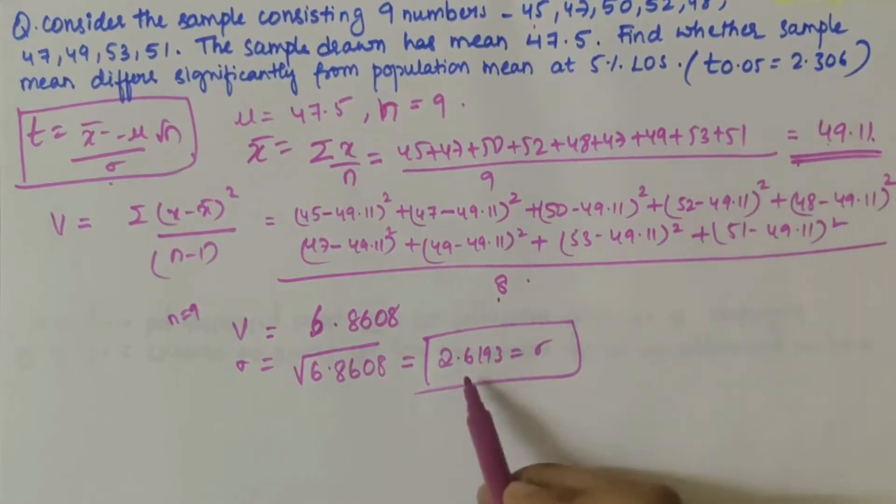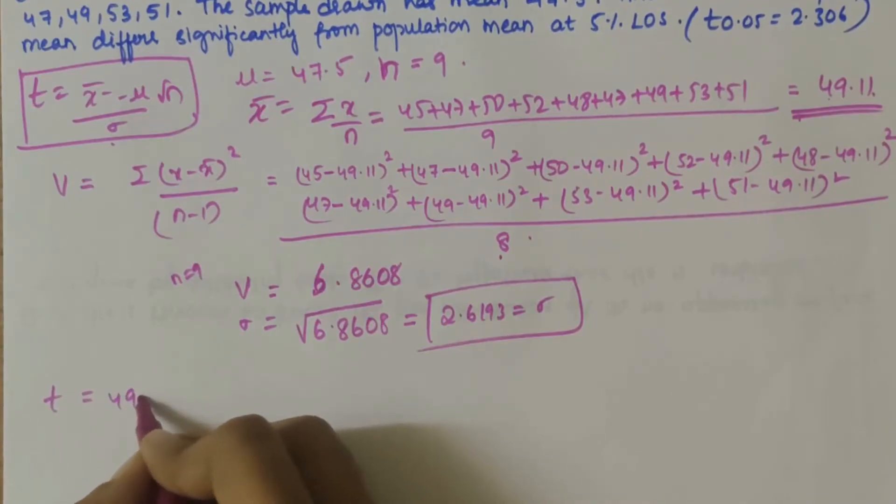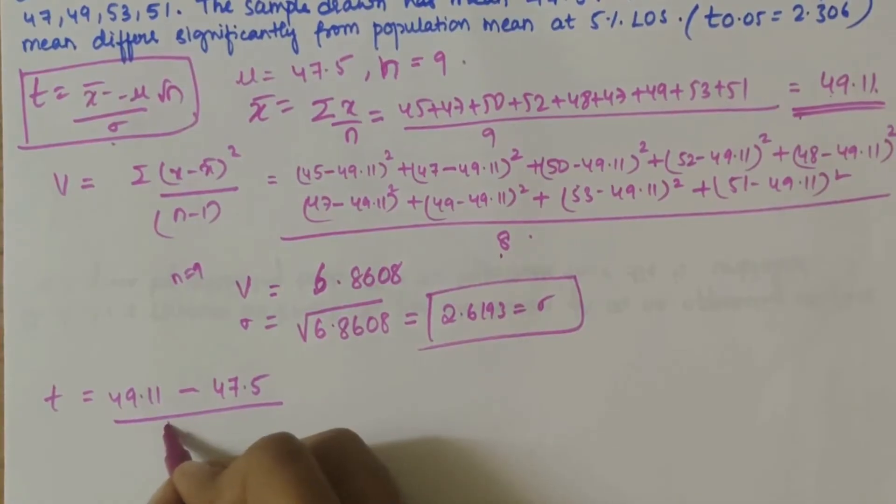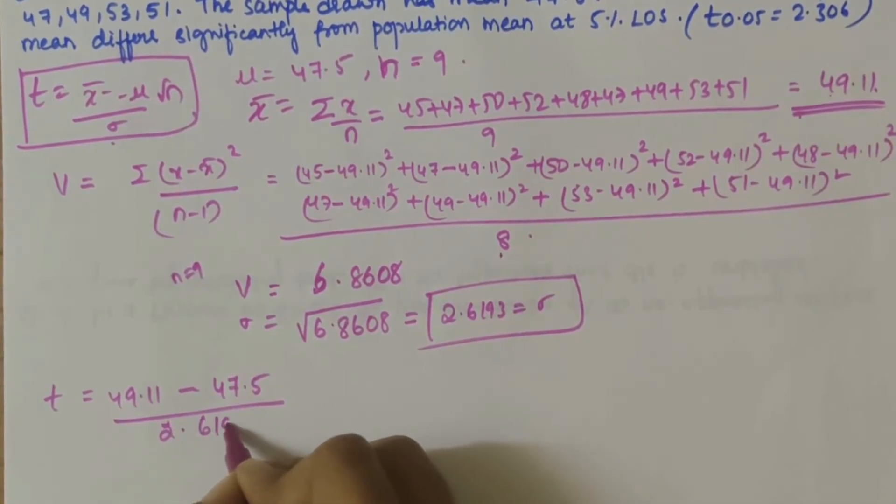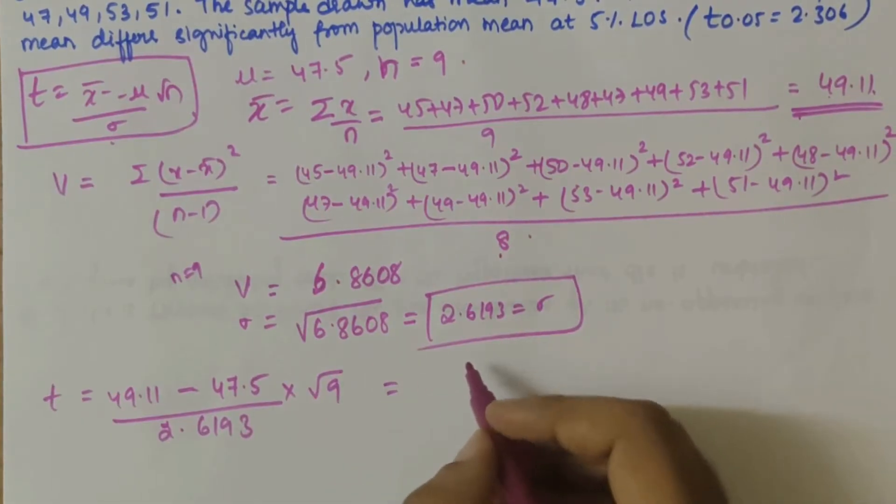We have found out the x bar value and sigma value. Now, let's substitute it in the equation: t is equal to 49.11 minus 47.5 divided by 2.6193 times square root of n, which is 9. The value is 1.845.